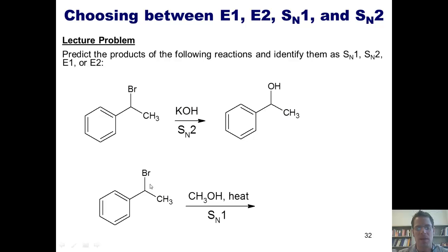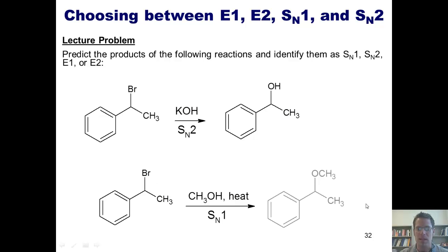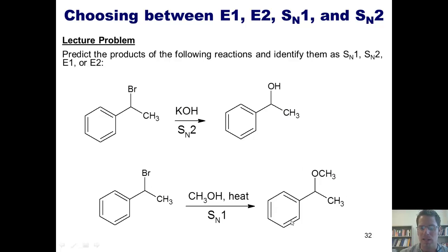The SN1 mechanism proceeds as follows: the bromide leaves, giving me a carbocation intermediate. The lone pairs on the oxygen come in, giving me a temporary positively charged oxygen intermediate, until it gets deprotonated by a second molecule of methanol to give me this product. If there were any stereochemistry in the starting material — that is, if I'd specifically drawn a wedge or dash to this bromine — it would be lost in the product, giving a mixture of both enantiomers.